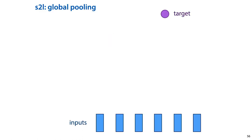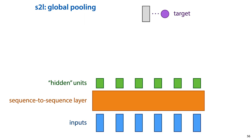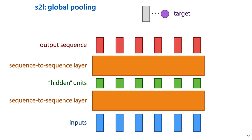In that case, the input and the output of our network look like this. We have an input sequence, but we have a single target. So the output of our network should be a single vector, which we can compare to the target to compute the loss. We can start as before by applying sequence-to-sequence layers to produce intermediate sequences and finally an output sequence, but at some point we need to reduce this output sequence to a single vector.